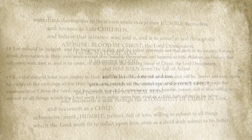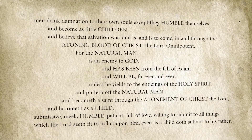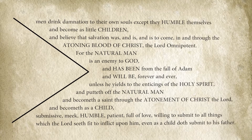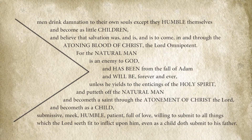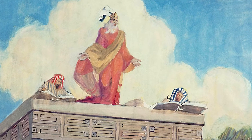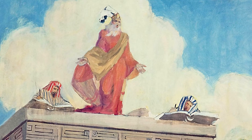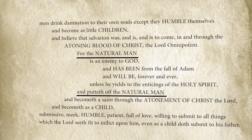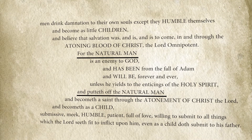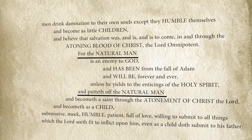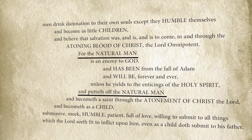Mosiah chapter 3 verses 18 through 19 was the second chiasm discovered in the Book of Mormon. It is long and precise, and statistically speaking, one of the strongest. It even occurs at the center of King Benjamin's speech, which is itself arranged as a chiasm. The term 'natural man' shows up as a repeated element, and yet it can't be found anywhere else in the Book of Mormon, thus strengthening the likelihood that this chiasm was intentional.